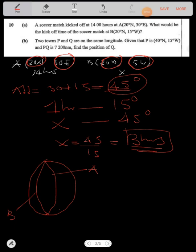Now as you go towards the west, this is west, this is east. As you go towards the west, time decreases. As you go towards the east, time increases. So we have to subtract this because we're decreasing in time. So we have 14 hours minus 3 hours. So at B the football match kicked at 11 hours.